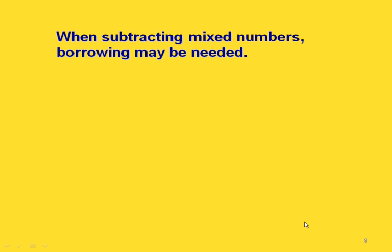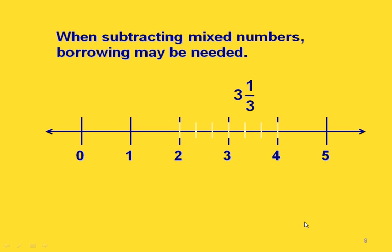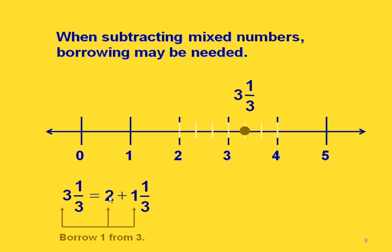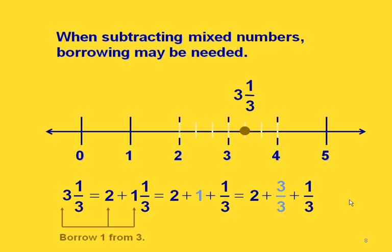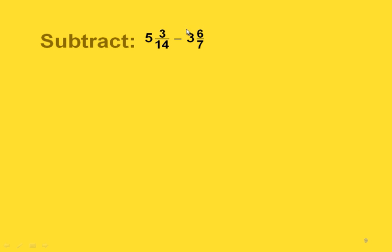We can also subtract with mixed numbers. Sometimes we actually have to borrow when subtracting the fractional parts. For example, if we have 3 and 1 third, we could rewrite it with 2 as the whole number part and write the fractional part as an improper fraction. Basically we're borrowing 1 from the 3, leaving a 2, and putting the 1 with the fractional part as an improper fraction. That gives us 2 and 4 thirds — the same number as 3 and 1 third, just written differently.